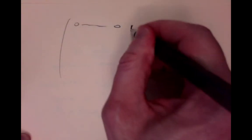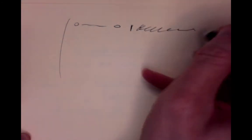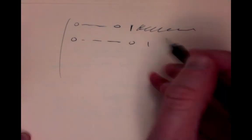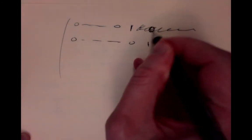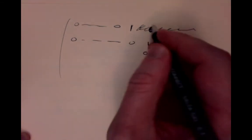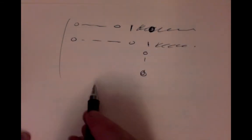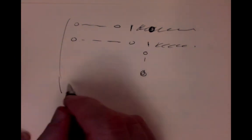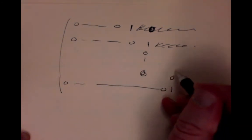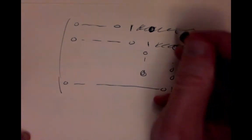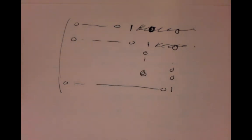Reduced row echelon form is a slightly stricter criterion. If we want it to be reduced row echelon, there are maybe some zeros and then a one, then anything can come after that. Then a whole bunch of zeros — at least one more zero, maybe several — and then a one. But since this is a one, there has to be zeros above it and below it all the way. In the reduced row echelon form, when you get a one showing up as its pivot, everybody has to be zero all the way up to the top as well as all the way to the bottom.